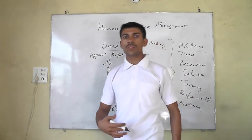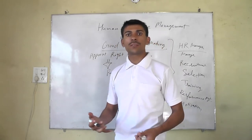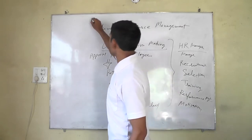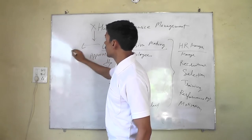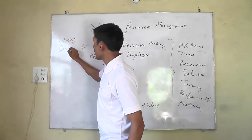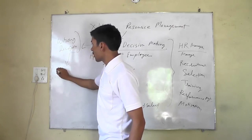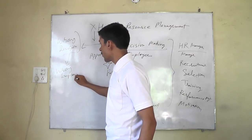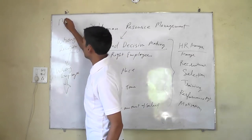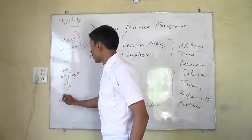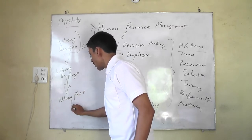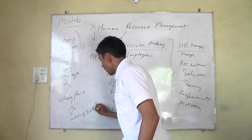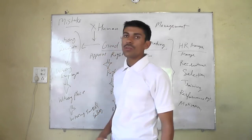If a business does not manage HR, there is a loss of the investment given in the form of salary. If this is not done, what will happen? This is a wrong decision — it means the wrong employee will be appointed at the wrong place. This is a mistake of the business: wrong place, at the wrong time, with the wrong salary. So this is a loss.